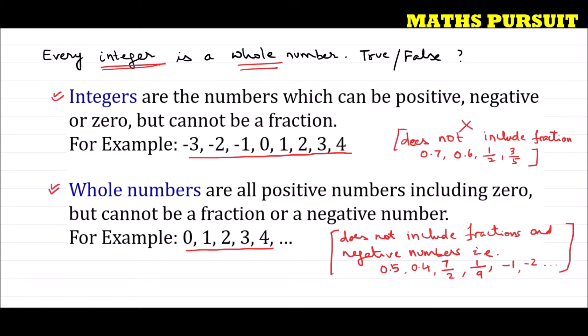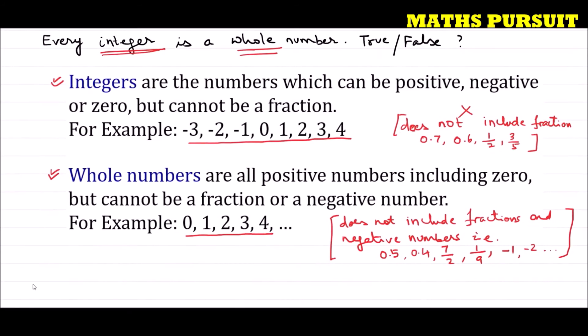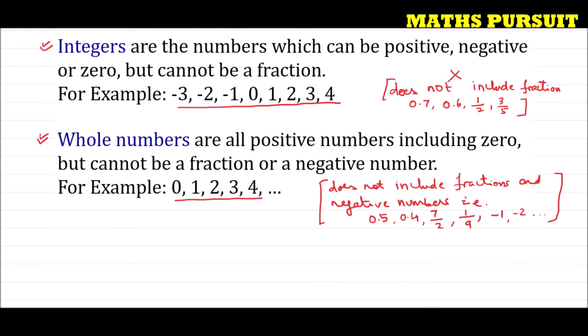The main common difference between integers and whole numbers is that they both do not include fractions. However, the additional difference is that whole numbers do not include negative numbers, whereas integers do. Now, after understanding integers and whole numbers, let us look into this statement.